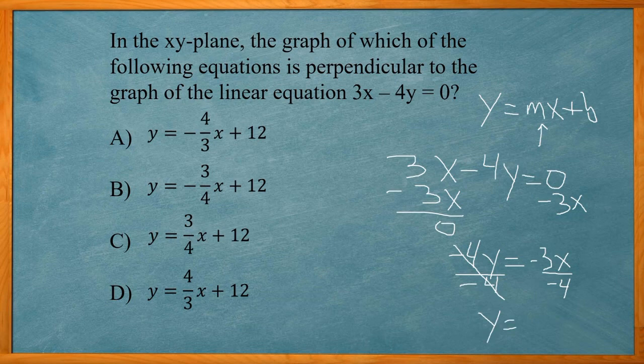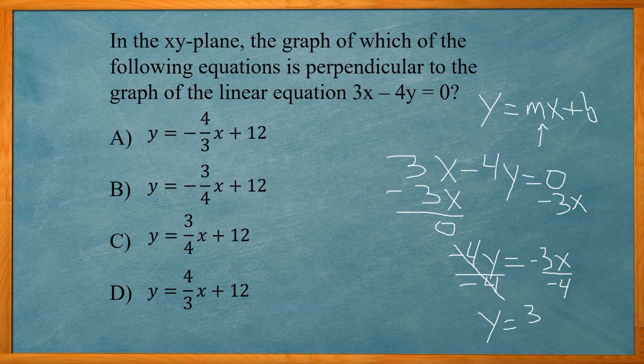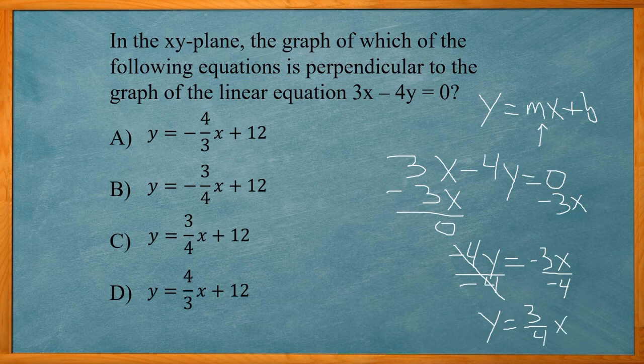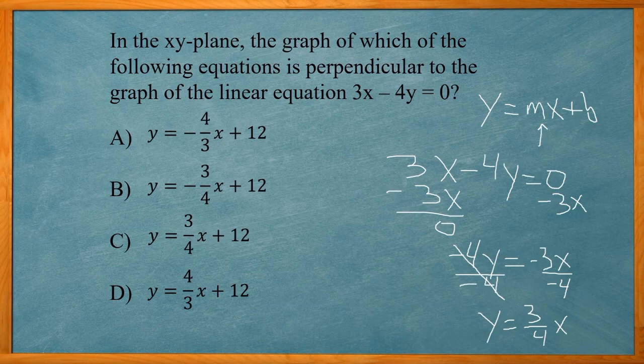On the right side, negatives are going to cancel each other out, give me a positive number, 3 fourths x. Whatever is in front of the x term is our slope. So our slope here is 3 fourths.